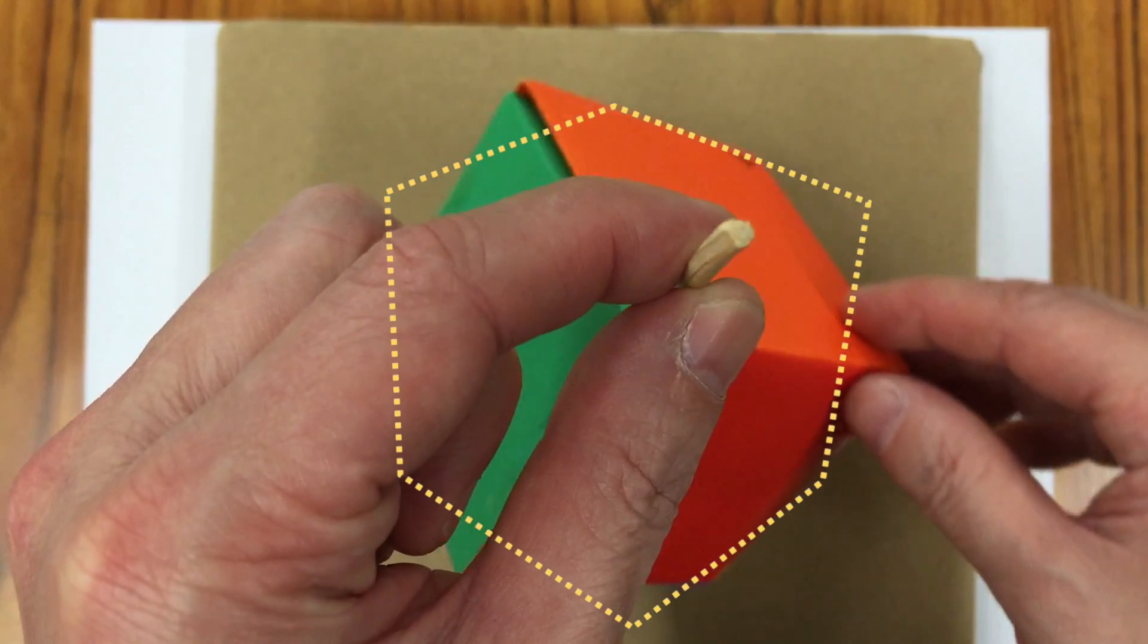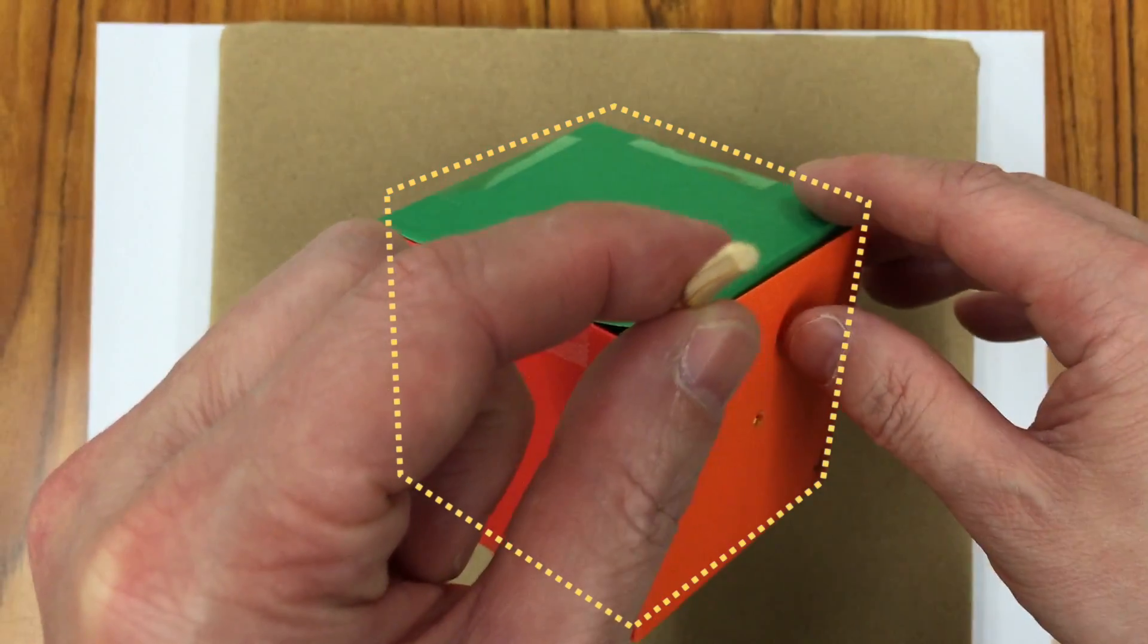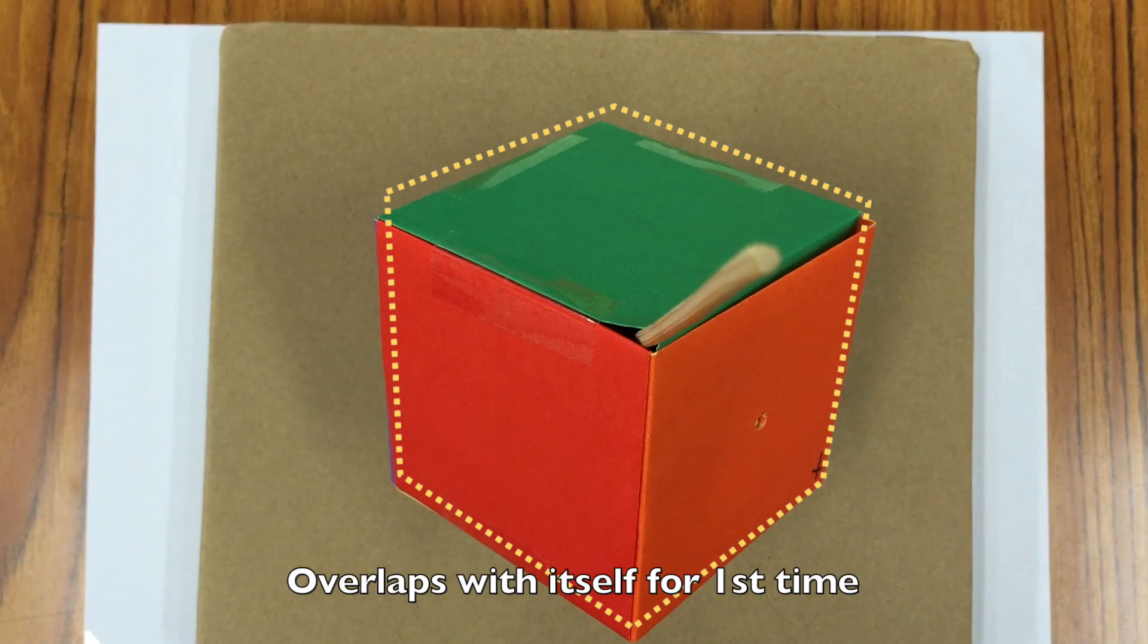If you rotate it by 120 degrees, it will overlap with itself for the first time.